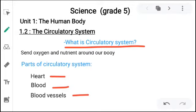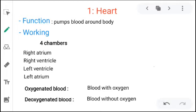Let's discuss heart, which is the main organ in the body working every second. Function of heart is to pump blood around the body. Working: there are four chambers in the heart, right atrium, right ventricle, left ventricle, and left atrium.